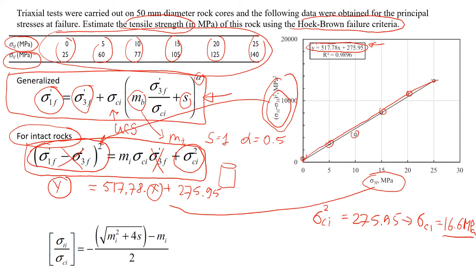So now what we're going to do is we're going to look at this part of the equation. And you will see here that we will have this component, mi times sigma ci, so it should be equal to 517.78. And we already know, from here we're going to find that mi, it's equal to 517.78 divided by sigma ci, which we already found, which is 16.6. And that will give us approximately 31.2.